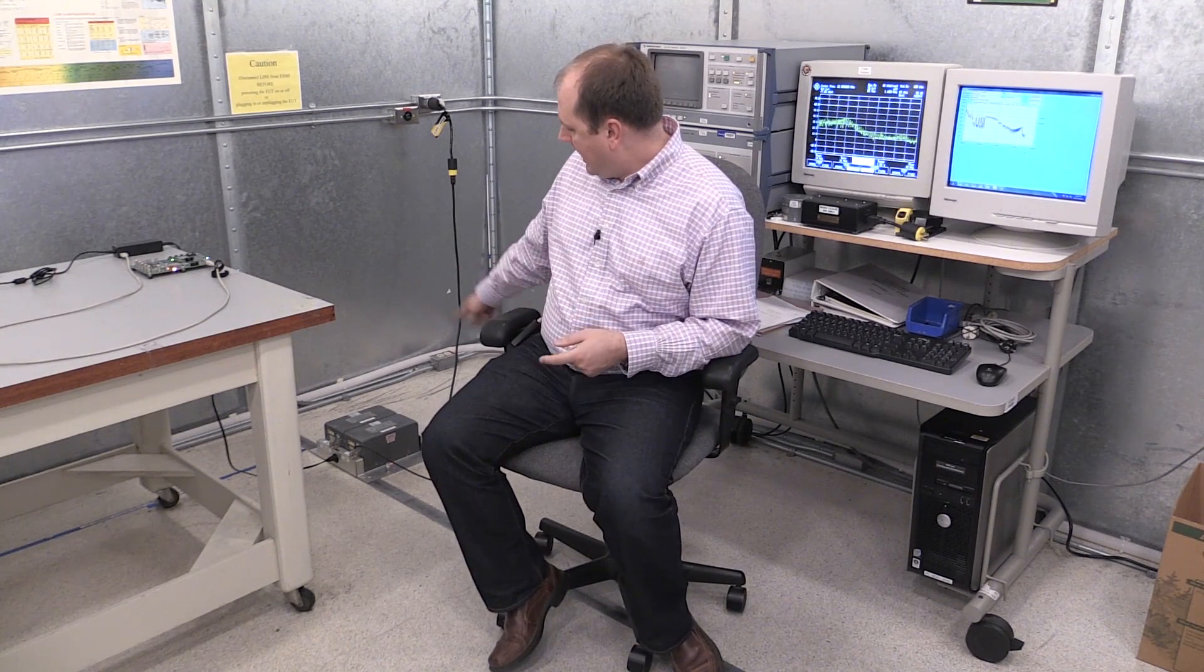Conducted emissions test means that I have my device under test plugged into power. So here I have an EMI receiver—it's doing conducted sweeps right now. The device under test is over on the table here and down on the floor there's something called a line impedance stabilization network.